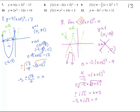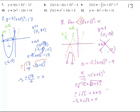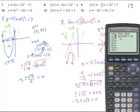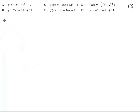Let's double check it on our calculator: negative 2 times the quantity x plus 5 squared minus 4. Graph it — and there we have it. Number 9: f of x equals negative 3 fifths times the quantity x plus 2 squared plus 7. Interesting — let's see what this one will look like with that negative 3 fifths.